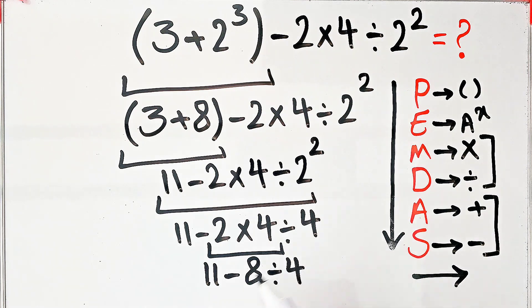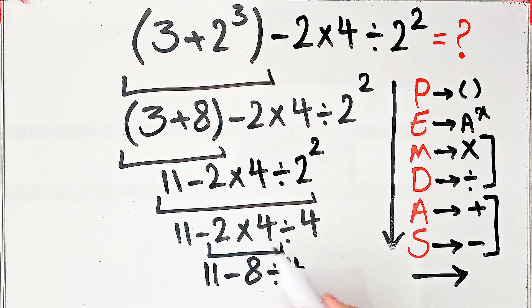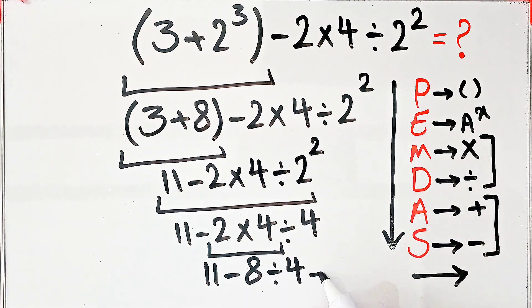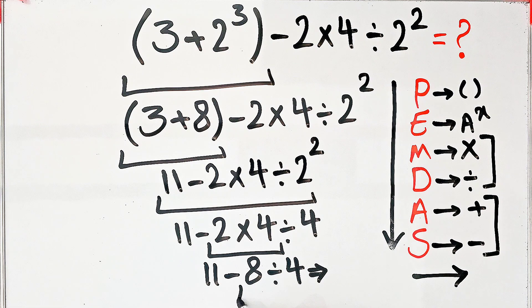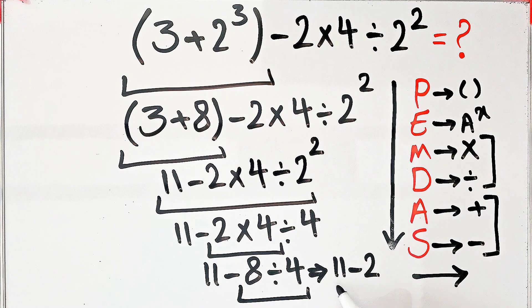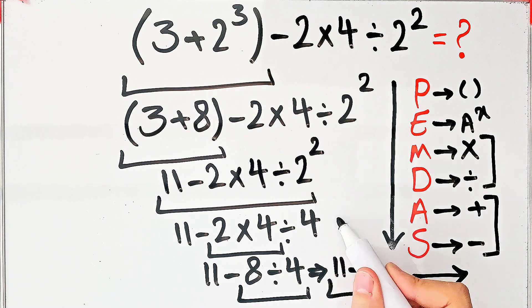First we do this division because division has higher priority than subtraction. Negative 8 divided by 4 equals negative 2, and the question is 11 minus 2, which equals 9. The final answer of this question equals 9.